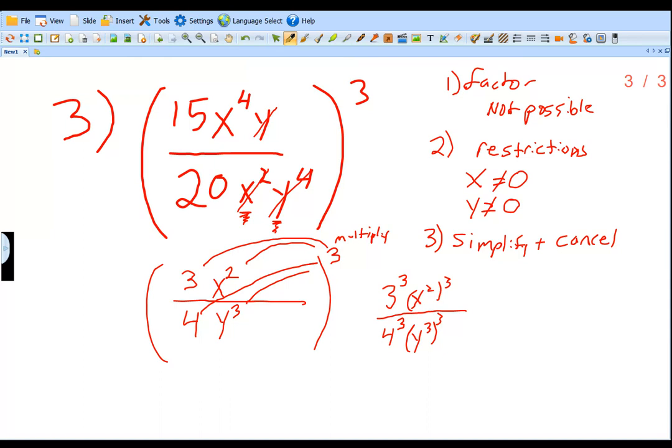3 to the third power equals 27. 2 times 3 would make it X to the sixth power. 4 to the third power is going to be 64. 3 times 3 would make this Y to the ninth power. Now once we've taken care of all those, this is our simplified version. We've simplified this, and that is our answer.